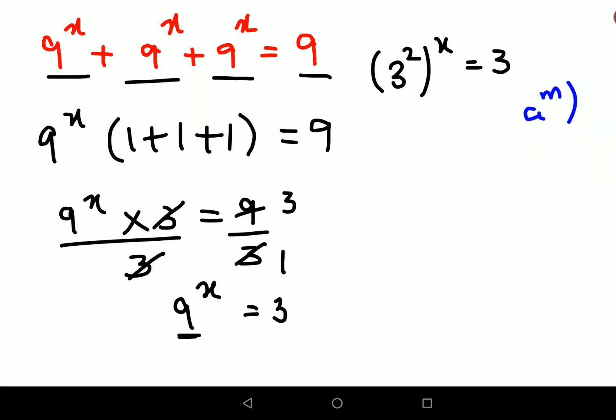question then changes to 3 raised to 2 into x, that gives you 2x equals to 3. Now when you have a single number 3, it's obvious that the index here is just 1. So I can say 2x equals to 1. Therefore, x value is 1 upon 2.